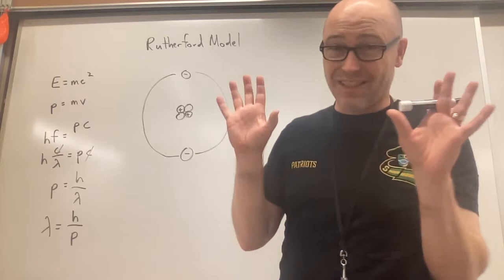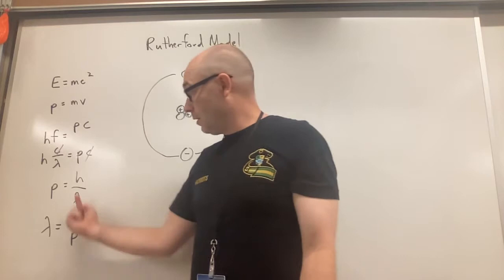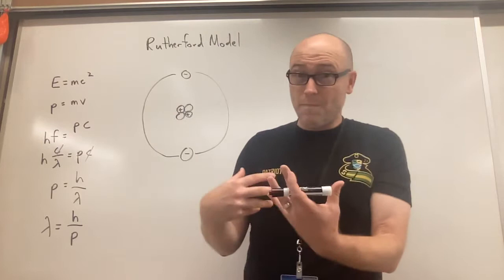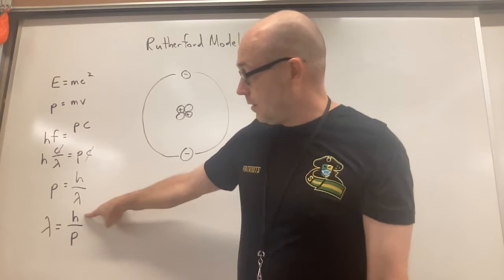He said, well geez, if light acts like a particle, then particles should act like waves, and particles then should have wavelengths. And you can find the wavelength of a particle by Planck's constant divided by the momentum that the particle has, which is pretty cool.